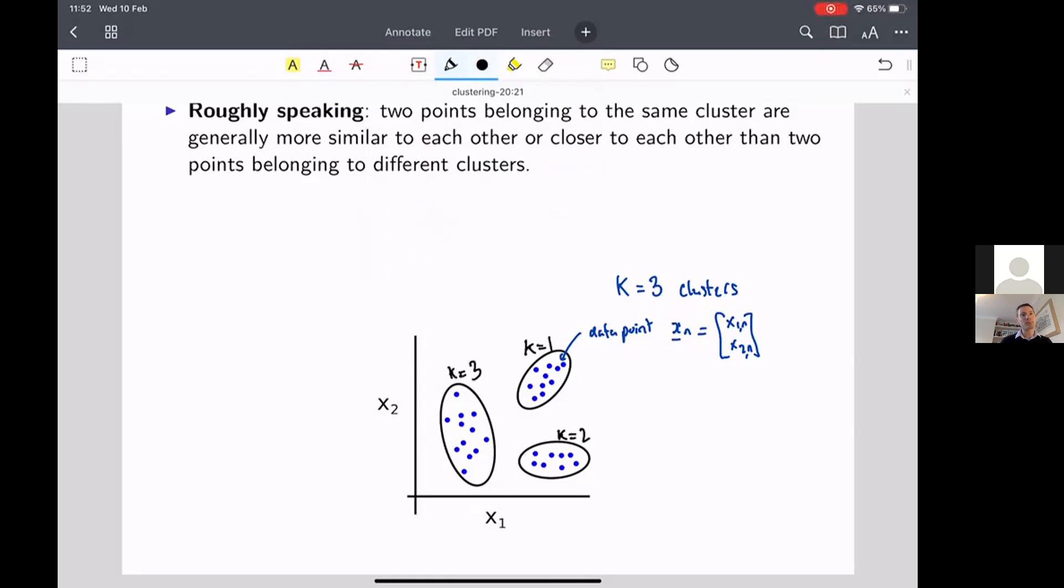And broadly speaking, the algorithm has operated in the following way: it said if two data points are near to each other, then they get assigned to the same cluster. And if two data points are far away from each other, they get assigned to different clusters. So nearby points get assigned to the same cluster, far away points get assigned to different clusters.